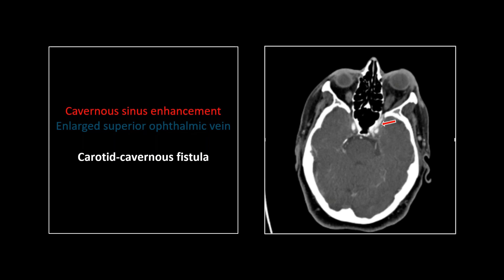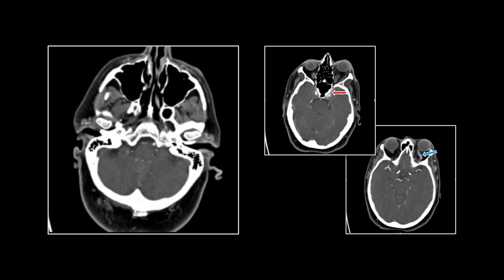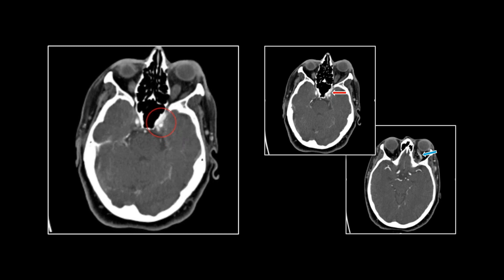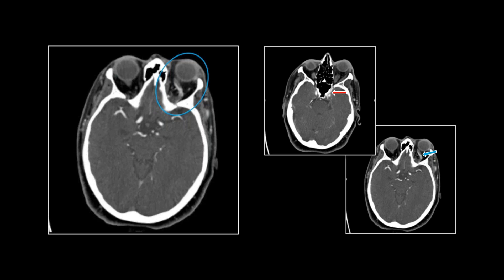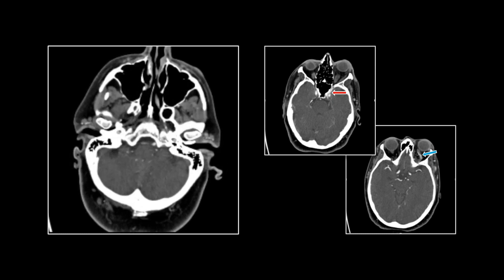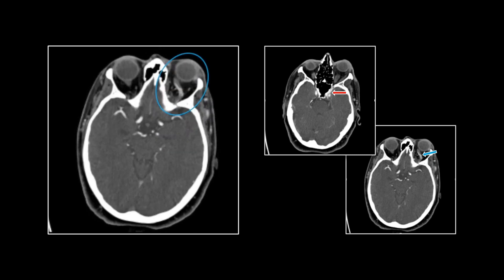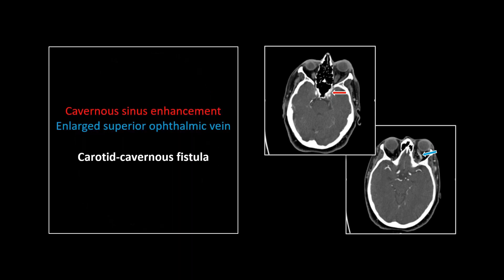This is quite a case. You can see there is contrast opacification in the left aspect of the cavernous sinus, which should not be there. And then the classic finding: our superior ophthalmic vein is markedly enlarged and showing retrograde contrast opacification. Those veins are valveless, and that's why it will manifest this way with chemosis and exophthalmos. So there is that dilated and enhancing superior ophthalmic vein and the enhancing cavernous sinus. That is a carotid cavernous sinus fistula.